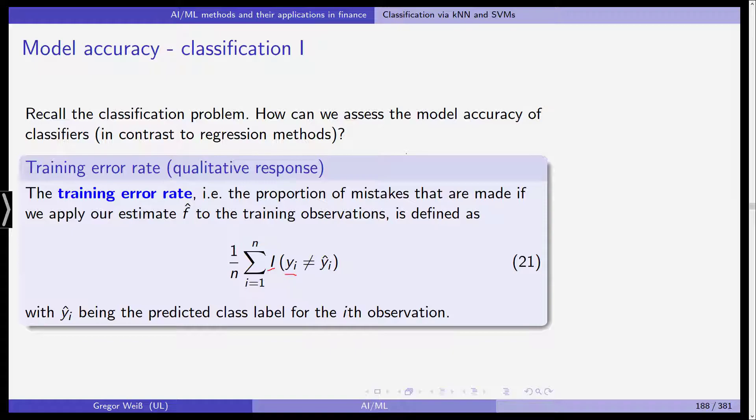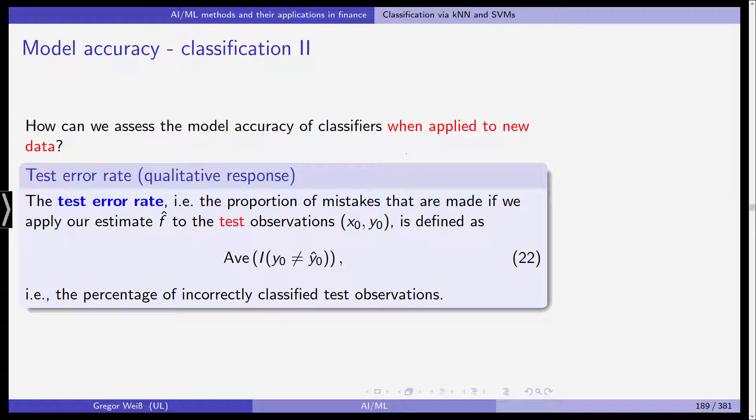So this is the training error rate done for the training data. In time series terminology, we would say in sample. And then it's clear that we can also look at the out of sample predictive performance. This here in statistical learning is called the test error rate. So the test error rate looks at the model accuracy of a classifier when the classifier that has been fitted is applied to new data.